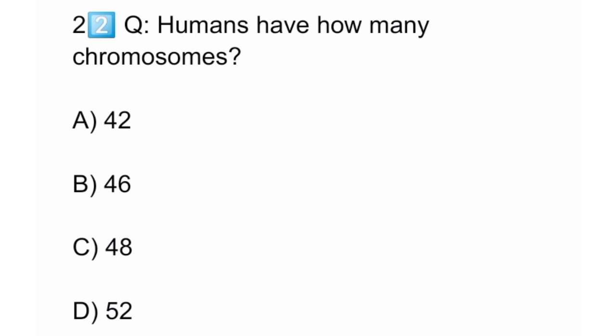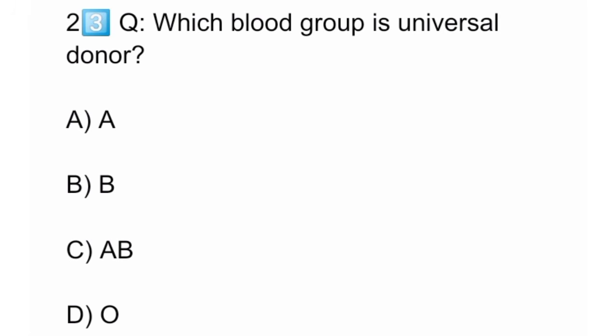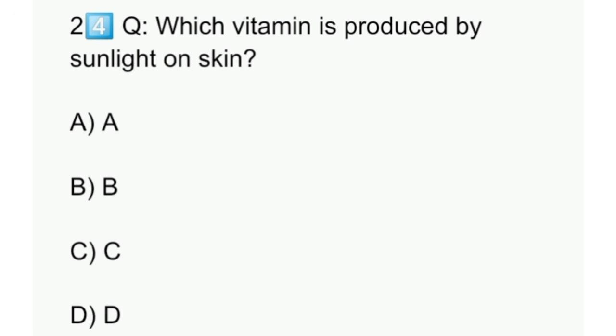Twenty-two: Humans have how many chromosomes? Twenty-three: Which blood group is universal donor? Twenty-four: Which vitamin is produced by sunlight on skin?